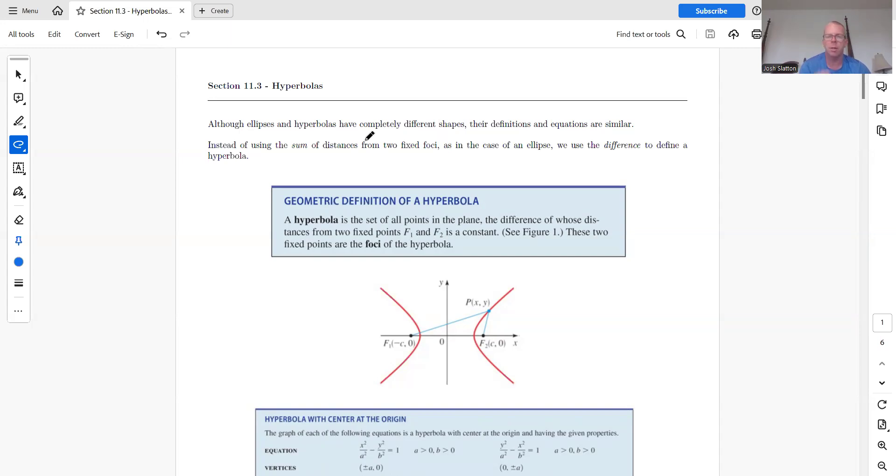The equation, which we'll see in a minute, is very similar to the ellipse. They have completely different shapes, but their definitions and equations are similar. So instead of the sum of the distance between the two fixed foci, as in the case of the ellipse, we use the difference.